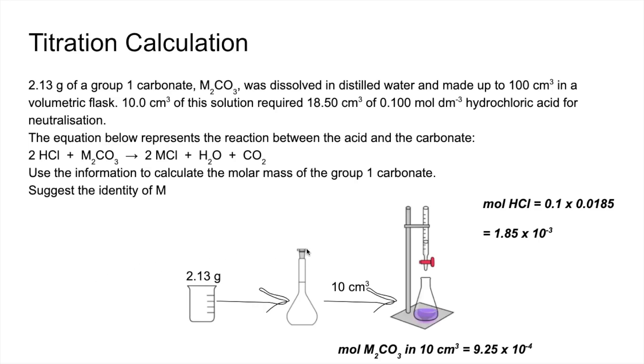So to work out how many moles of the carbonate are in here, and therefore also the 2.13, we multiply that by 10 because this is 10 times bigger than the 10 cm³ used in the titration. So it's that many moles. And to work out the MR of the carbonate, it's mass divided by the moles, and we get 230.3.